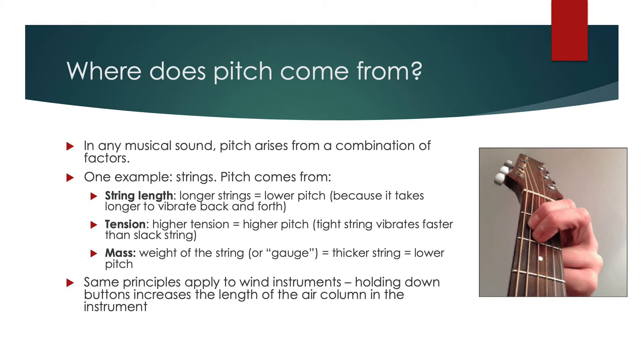The tension of the string. Tighter string equals a higher pitch, which creates a higher note. A looser string creates slower vibrations and a lower pitch. And then finally the weight of the string or the mass of the object that is vibrating. A thicker string equals a lower pitch.